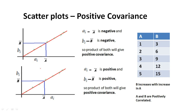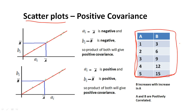Let us understand positive covariance using scatter plots. Using this example data, I take feature A on the x-axis and feature B on the y-axis and plot the values. The red line is the best-fit line. a-bar is the mean of the A values, and b-bar is the mean of the B values. a_i can be any random value in feature A such that a_i is less than a-bar.